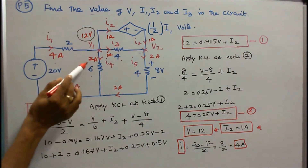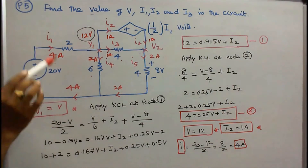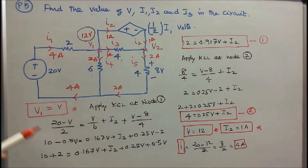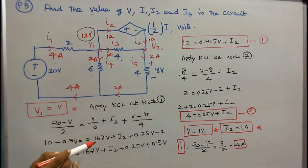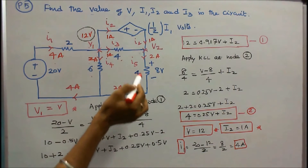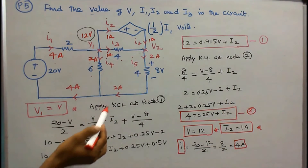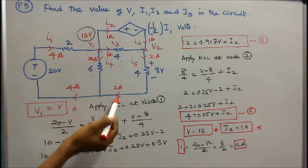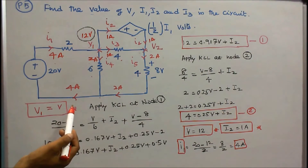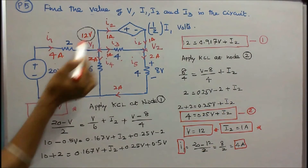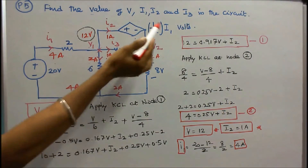At node 1, 12 by 6 is equal to 2. Current towards the junction is 4, current leaving the junction is 2 plus 1 plus 1, that is equal to 4. Kirchhoff's current law is verified. At node 2, current towards the junction is 1, and 8 by 4 is equal to 2, so current towards the junction is 2, current leaving the junction is 2. At this point 2 plus 2 is equal to 4. Kirchhoff's current law is verified. V is equal to 12, I1 is equal to 4, I2 is equal to 1, I3 is equal to 1.